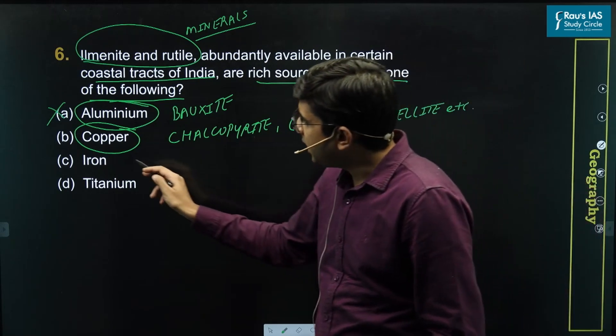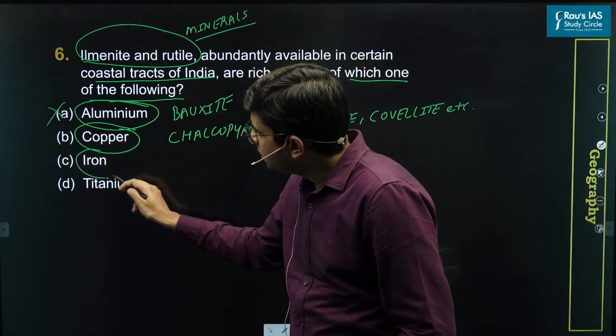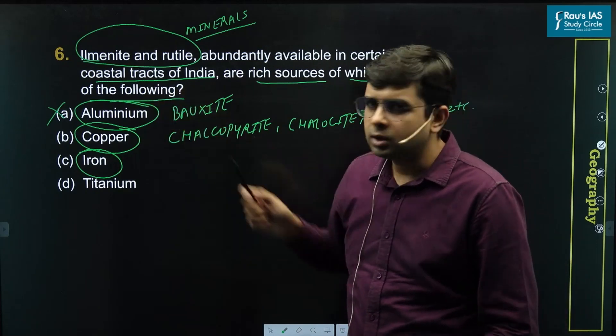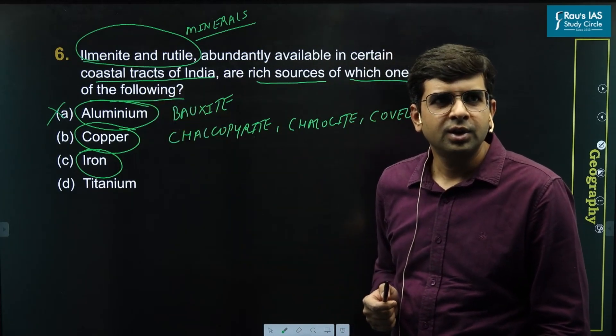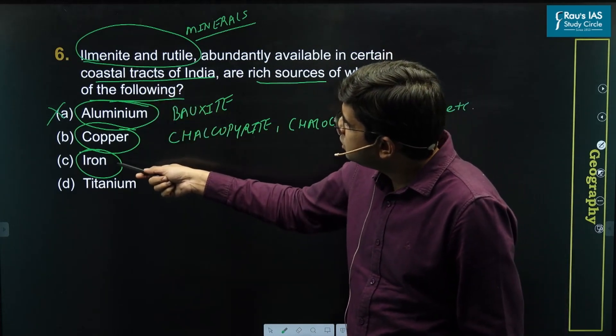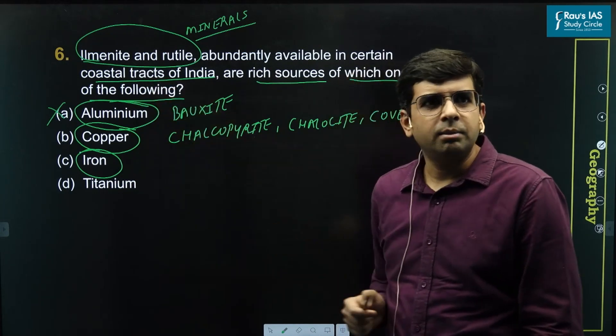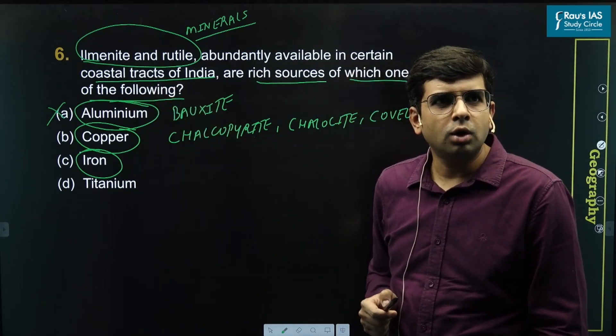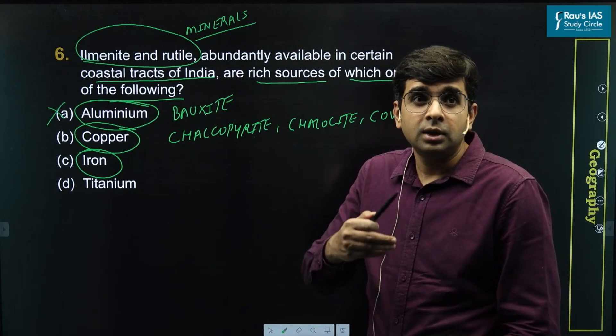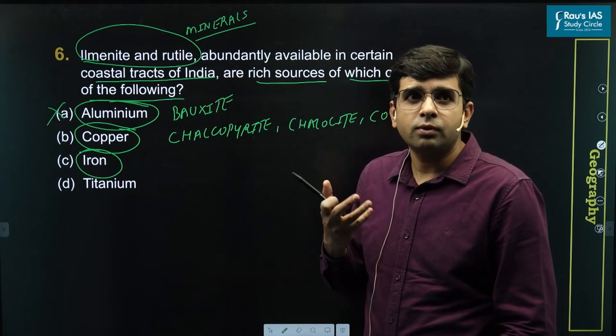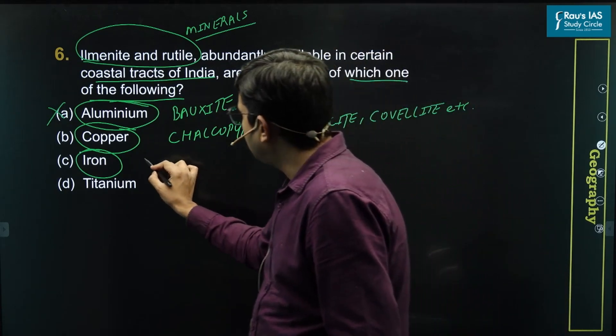What about iron? Iron is present in ilmenite to a certain extent, but it is not the chief ore of iron. The chief ore of iron which has abundant presence of iron in it is hematite,